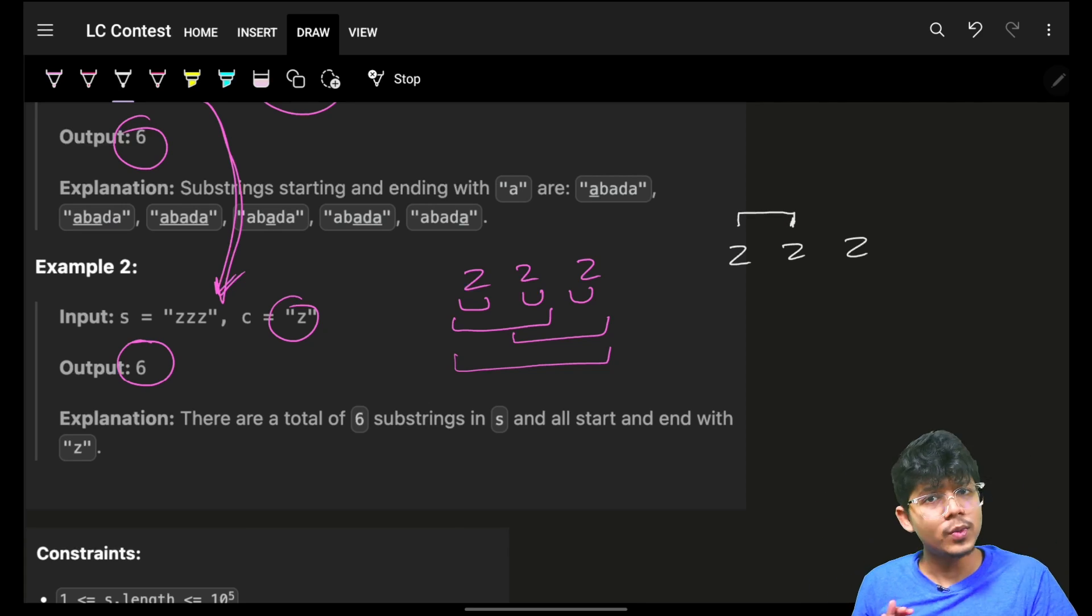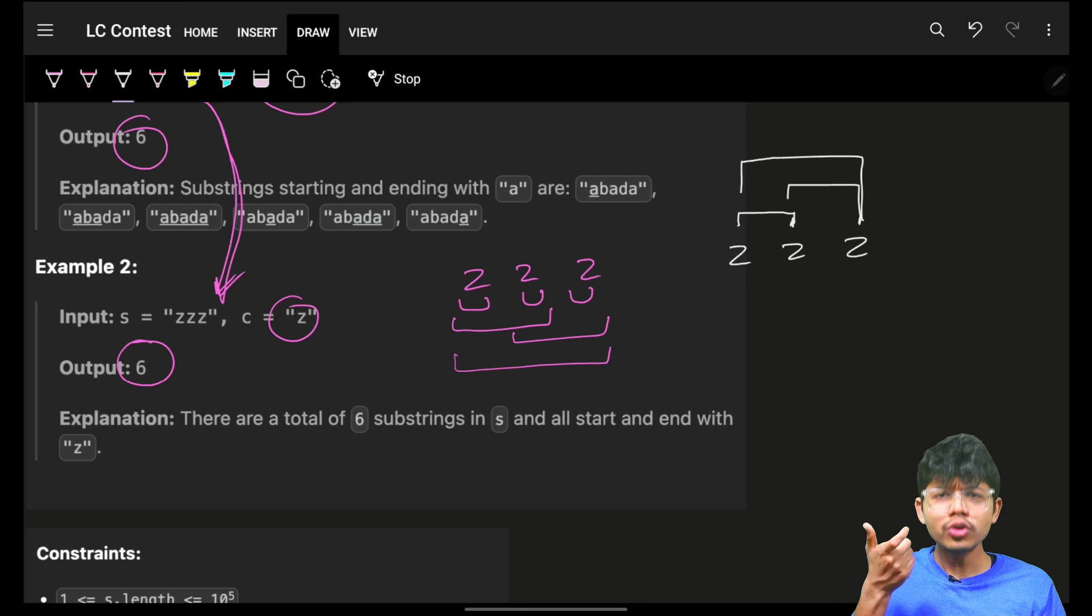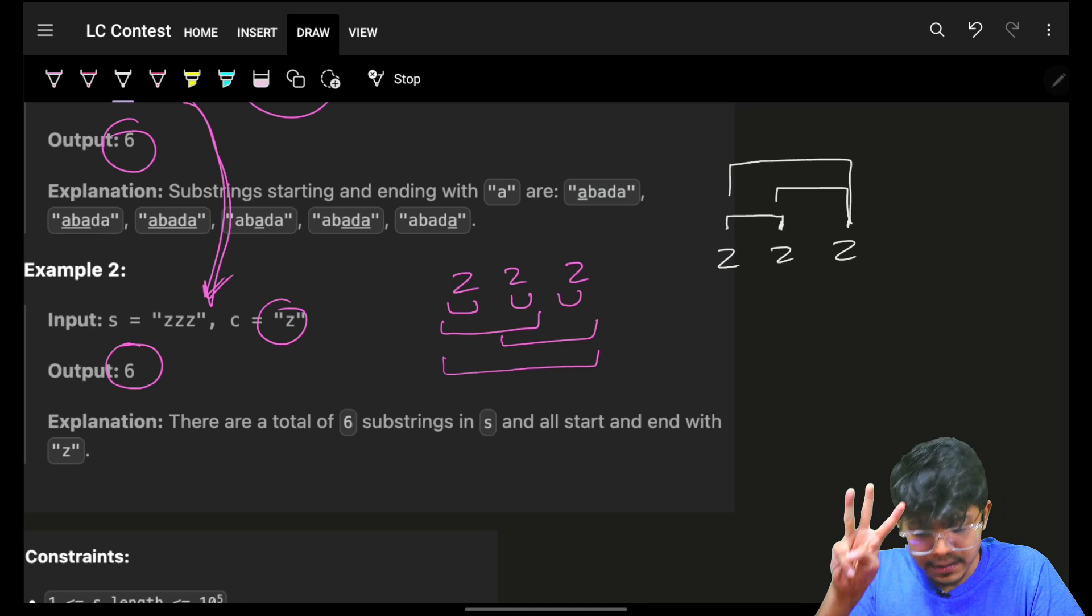Previously from this index I can have, I can make this one, one substring. From this index I can make one substring like this and another like this. So what's the answer then? What is the answer then? So if I ask you, if I have three elements: